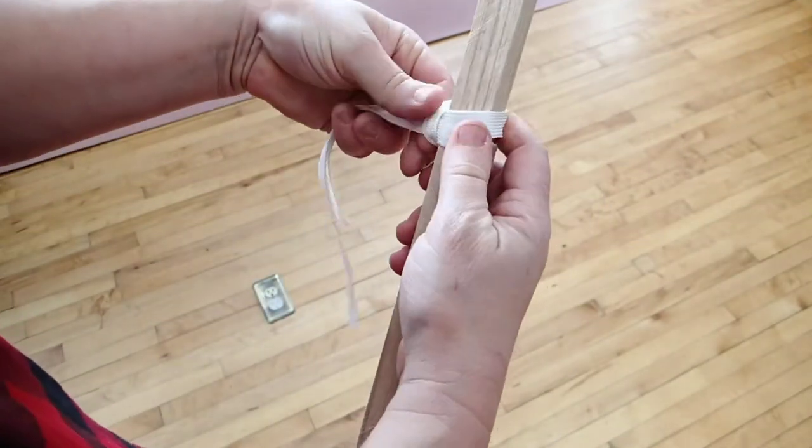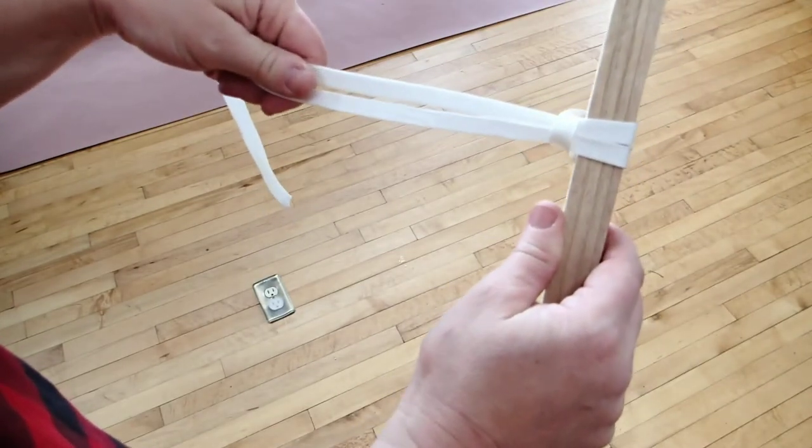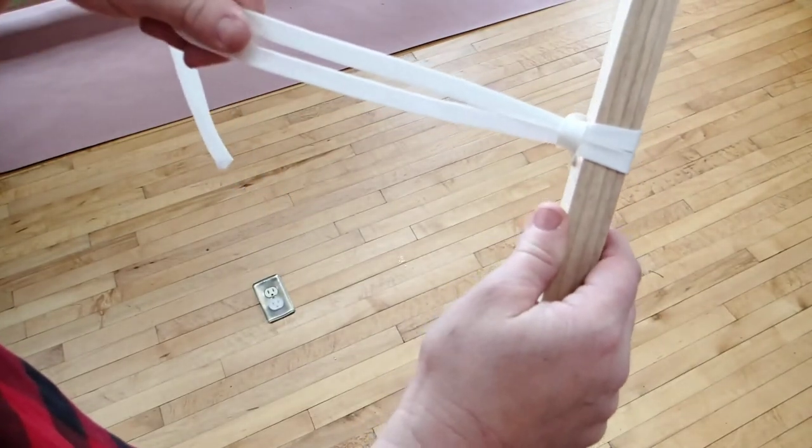Essentially that's all there is to a lark's head knot. Those are making up all of the lacing along the sides of the frame on the main body of your snowshoe.